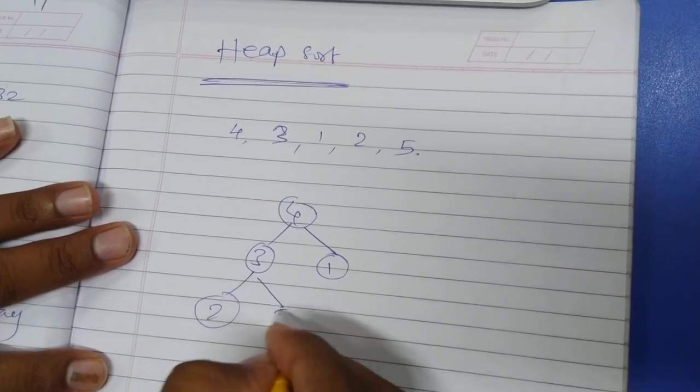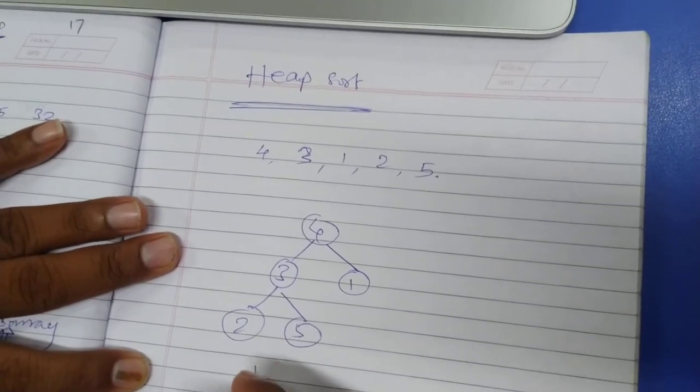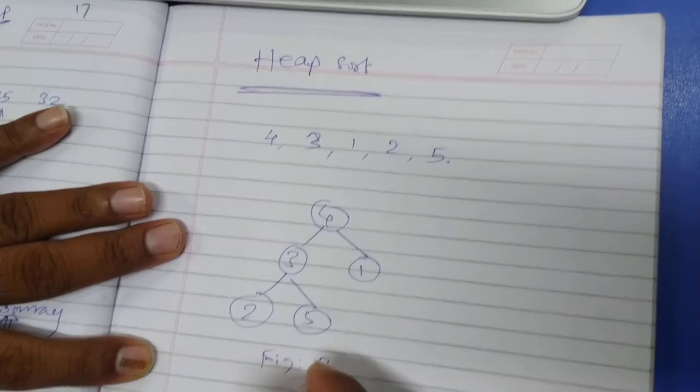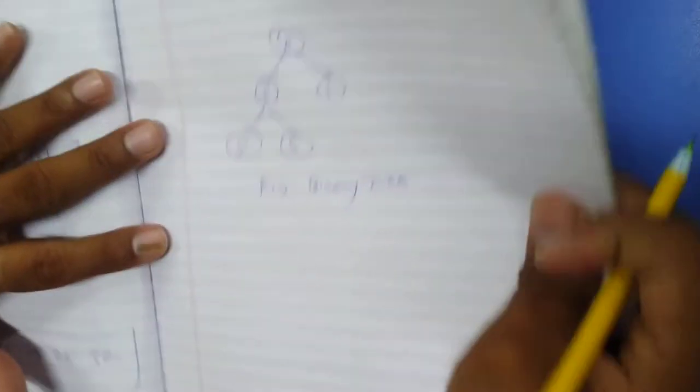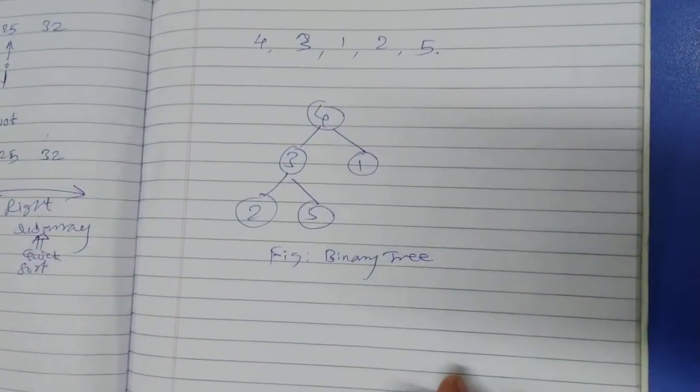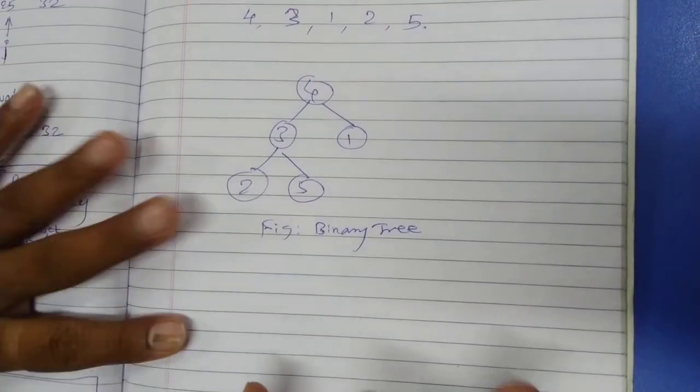1, 2 and 5. This is just a binary tree that we have designed for the given list of elements. 3, 1, 2 and 5. It's not a binary search tree, it's a simple binary tree.